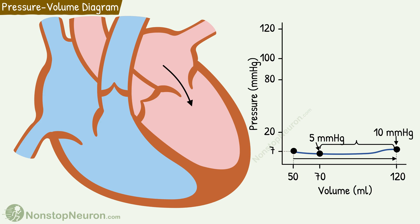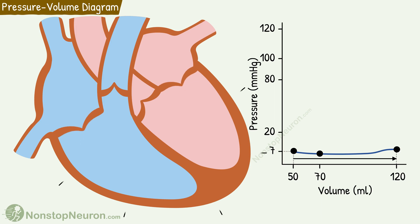This much increase in volume without much increase in pressure shows that ventricular compliance is high during diastole. Now at this point, the mitral valve closes and isovolumetric contraction begins. There is no movement on the x-axis, which shows that the volume is not changing, because there is no flow of blood during this.